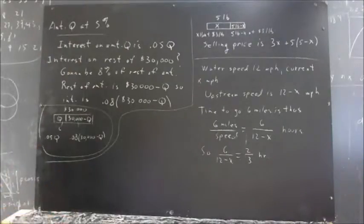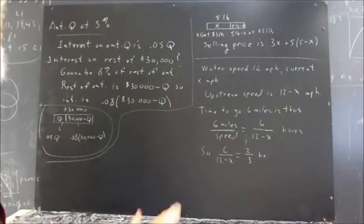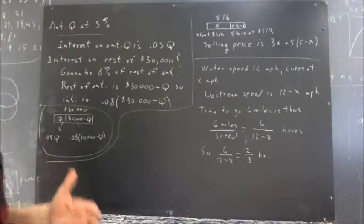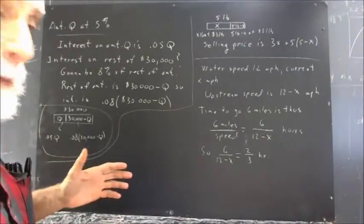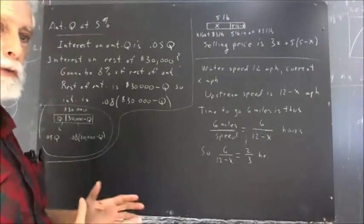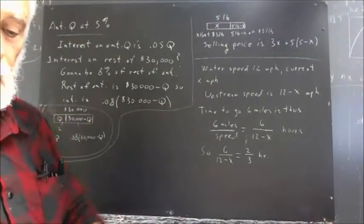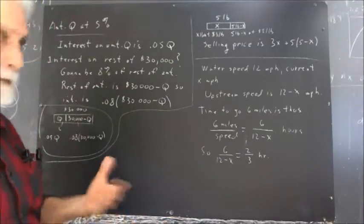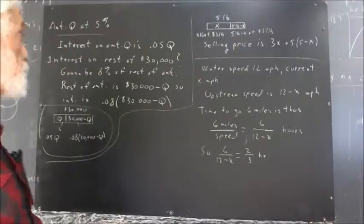Assuming you've read the first question, the first bullet on problem one. It asks you about investing $30,000 when you invest amount Q at 5% and the rest at 8%. How much interest do you get?